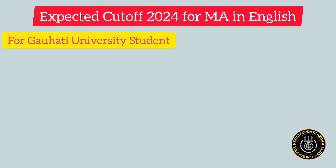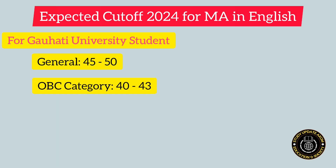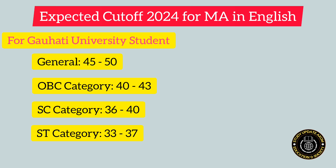Now let us see what may be the expected cutoff for MA in English under Guwahati University Entrance Exam 2024. For Guwahati University students, the General category range may be between 45 to 50. For OVC category it may be 40 to 43. For SC category the cutoff may be 36 to 40. For ST category including ST Hills and Plains it may be 33 to 37. For EWS category the range may be 35 to 39.